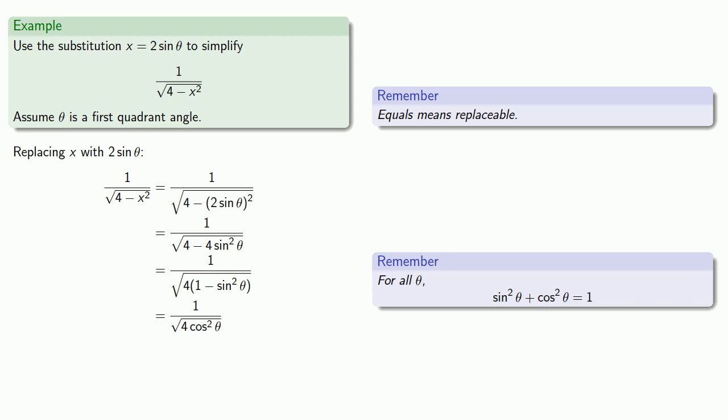Now ordinarily when we take a square root we have to worry about something being positive or negative, but because we're assuming theta is a first quadrant angle, the square root of cosine squared is just going to be cosine. And so this expression simplifies. And we won't get into the details now, that's for a later course. This expression, 1 divided by 2 cosine theta, is much easier to work with than 1 divided by square root 4 minus x squared.